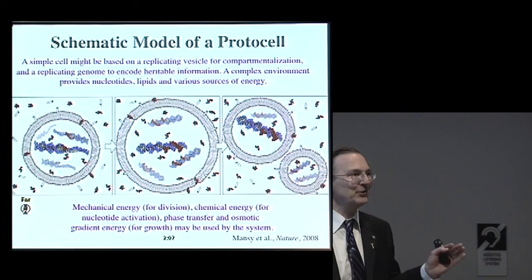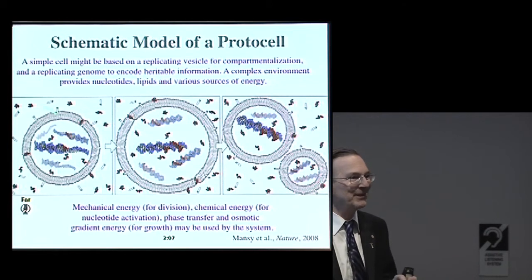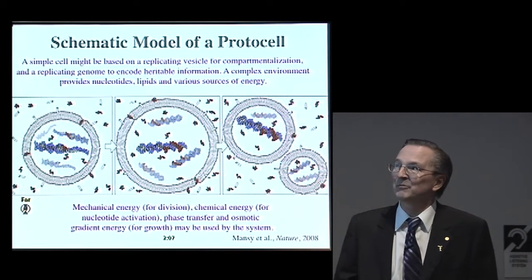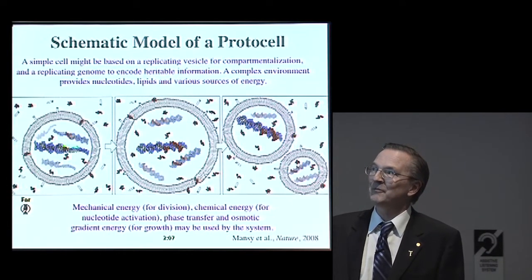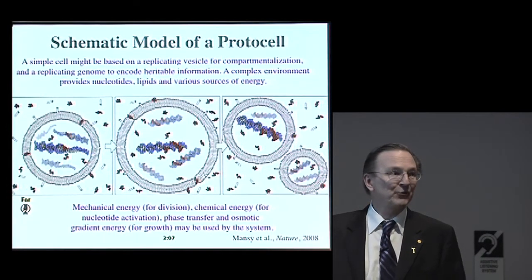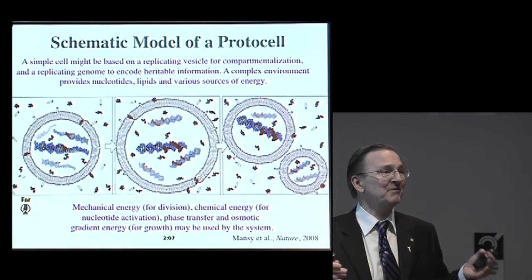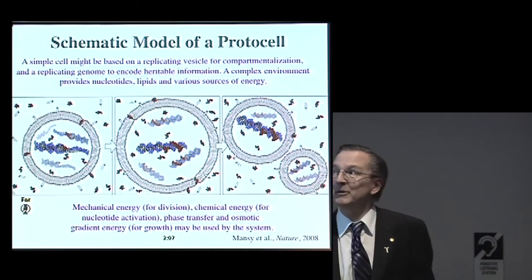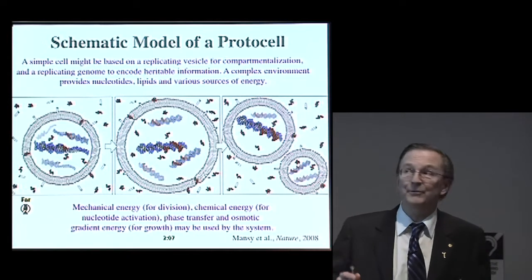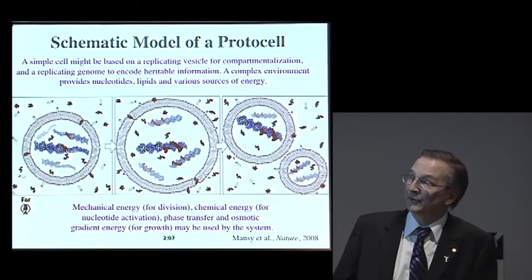Before evolution got started, there weren't any fancy complicated enzymes, so there has to be some simple chemical process that can copy the information in a strand of something. It could be RNA, it could be something like RNA. There's still a lot of uncertainty about what the first genetic polymers were. It could have been something really different that got taken over by RNA later on.